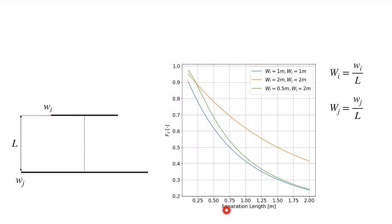As the surfaces get further apart, more radiation misses surface j. If we keep both widths equal — one meter versus two meters — and increase the size from blue to orange, the view factor increases, because a larger surface has a greater central section with a much higher probability of seeing the other surface. And if we make surface i smaller compared to surface j, it's more likely to hit than miss, which is why the green line is above the blue line.